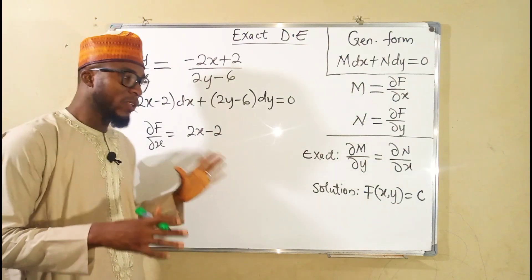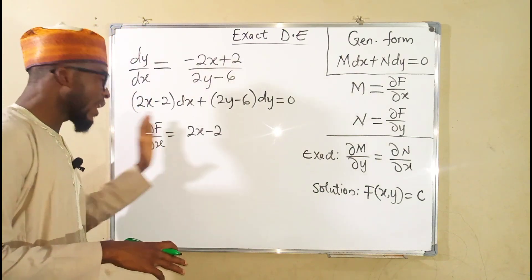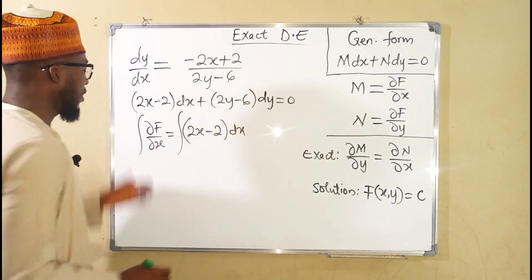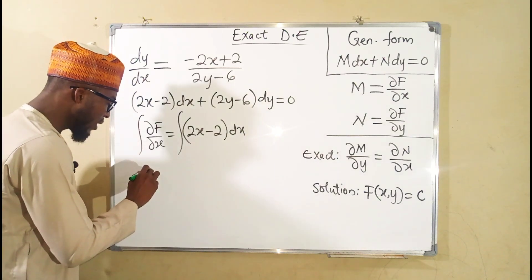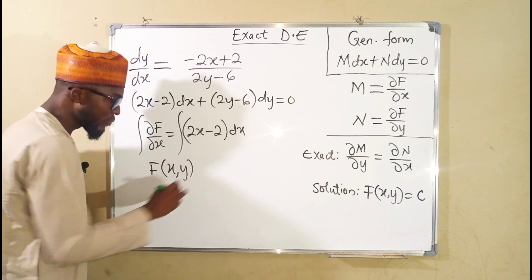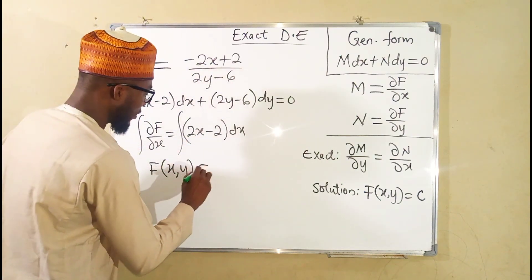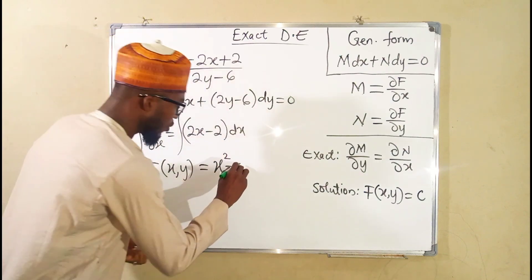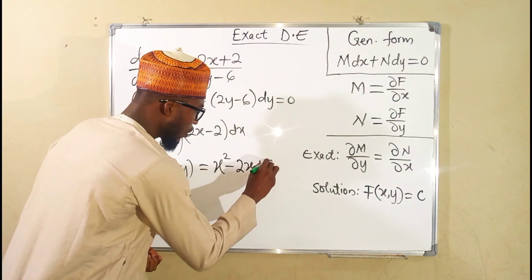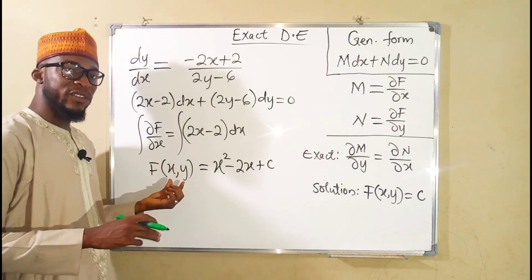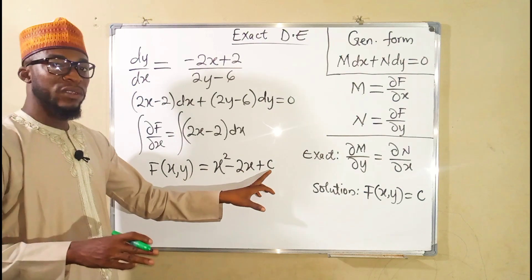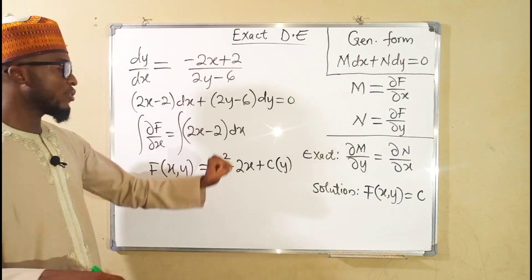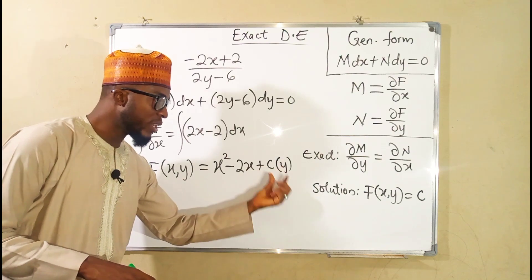We want to solve for f(x, y), so we integrate both sides with respect to x. Integrating the left-hand side leaves only f. On the right, integrating 2x gives x squared, and integrating 2 with respect to x gives 2x, so we have x squared minus 2x. Since this is an implicit function where y is treated as constant, our constant of integration is a function c(y). We still need to find the real value of c(y).